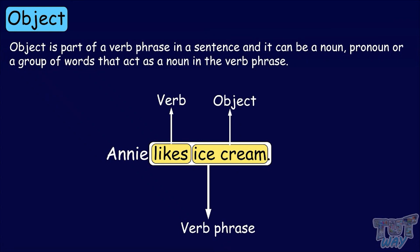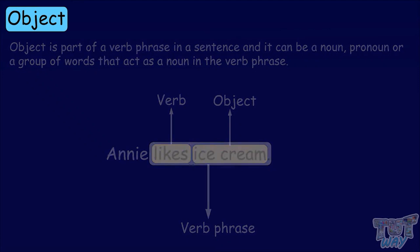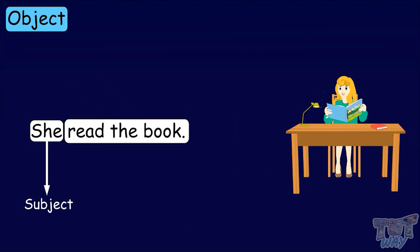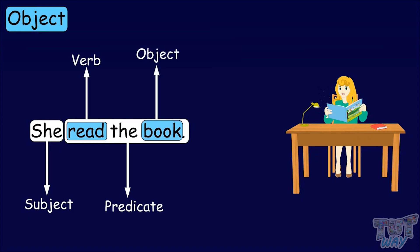We will understand it with the help of examples. The first one is: she read the book. She is the subject of the sentence. Read the book is the predicate of the sentence. In the predicate, read is the verb of the sentence, and book is the object.